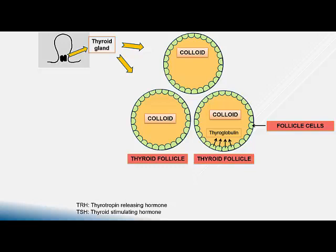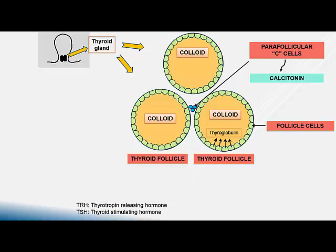These thyroglobulin molecules contain the amino acid tyrosine residues and generate the thyroid hormones. In between the thyroid follicles, in the connective tissue, there are scattered parafollicular C cells. These cells produce a hormone called calcitonin, which is not a thyroid hormone and is involved in calcium and phosphate regulation.